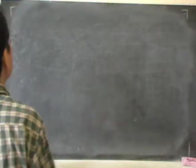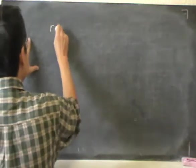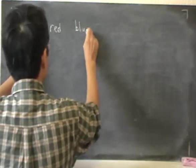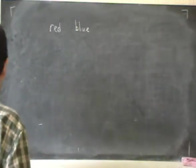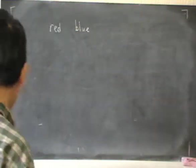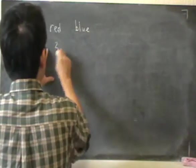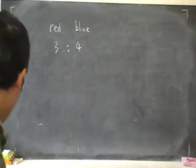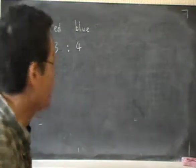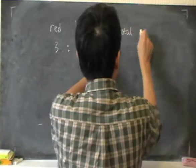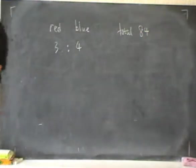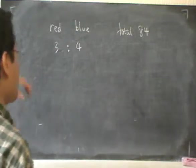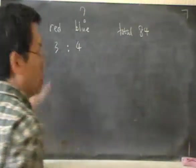Right, let's look at the next question. There are some balloons, there are some red balloons, and there are some blue balloons. Now, let's look at the next question. These are in the ratio of 3 is to 4. And we are given that the total number of balloons is 84. The question is to find the number of blue balloons.